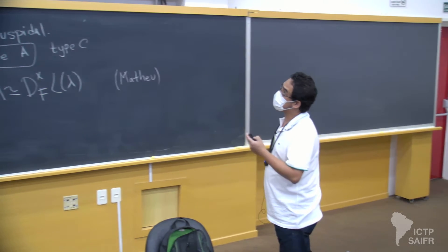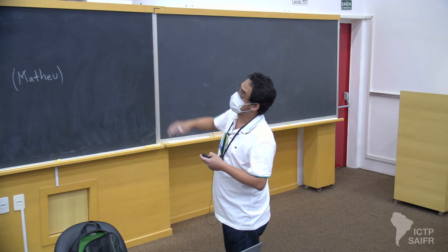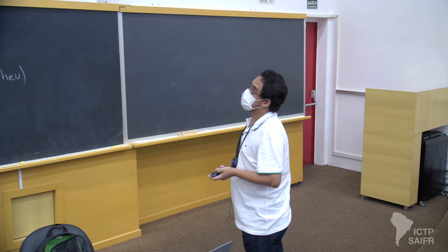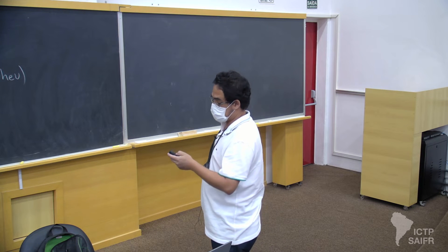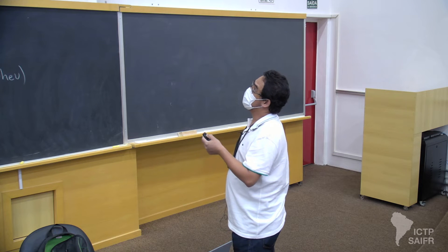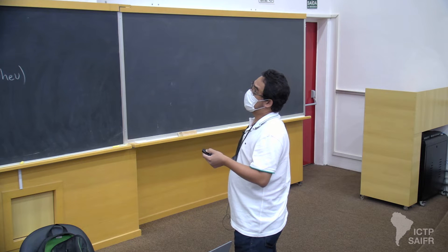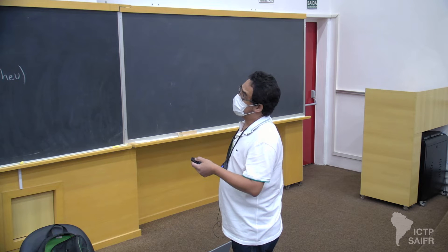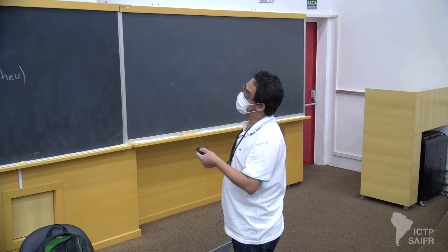Simply, I find this is a big problem. Now, regarding admissible weight modules: g is a simple Lie algebra, g has Kac-Moody algebra, and there are two conditions for lambda to be an admissible module.